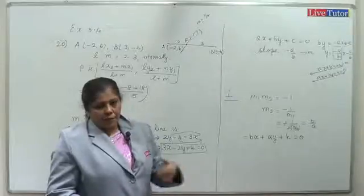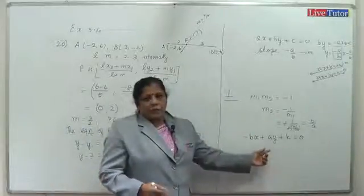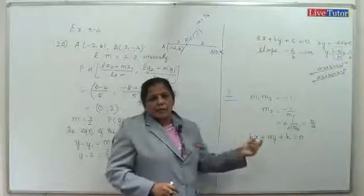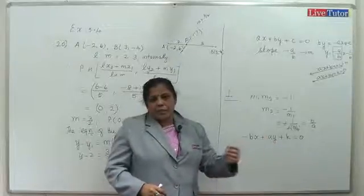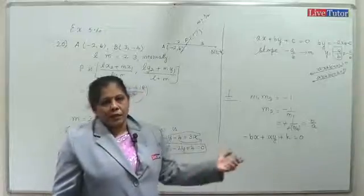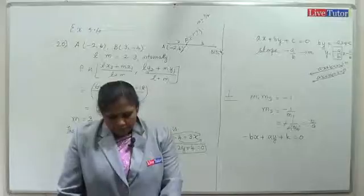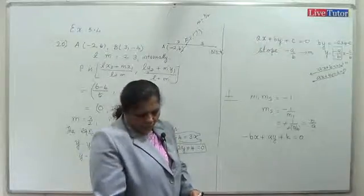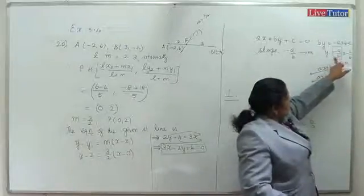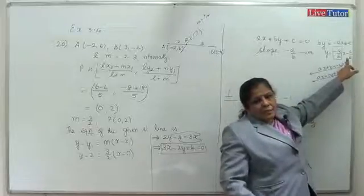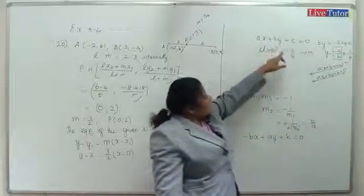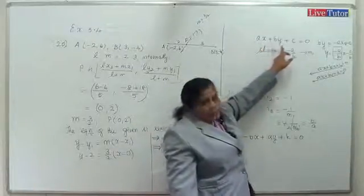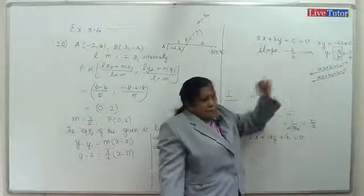To find k, you need at least one hint — they will give you a point through which the line passes. Using that hint, substitute to find the constant k. Also, for y equals mx plus c form, the y-intercept is minus c by b when ax plus by plus c equals 0.